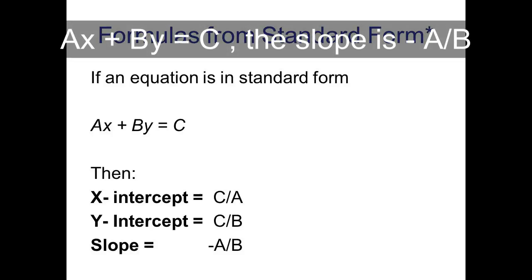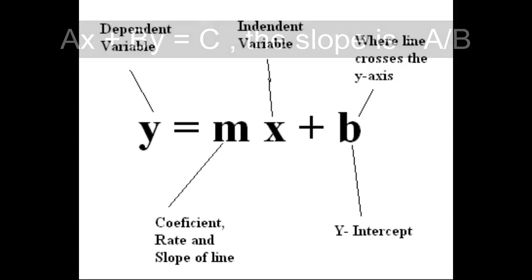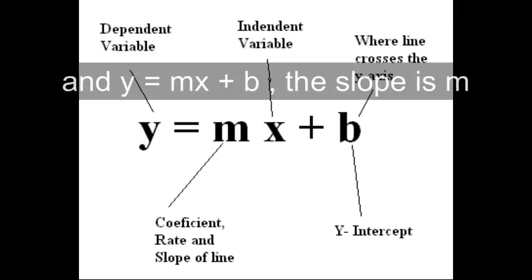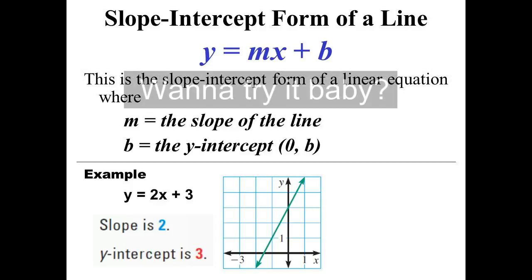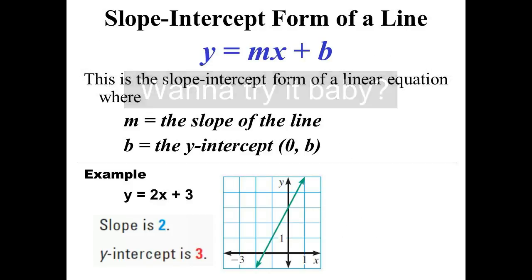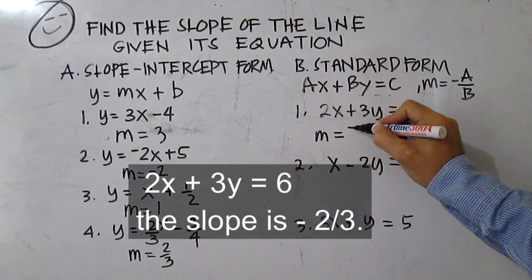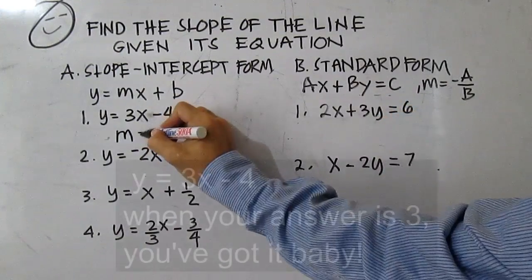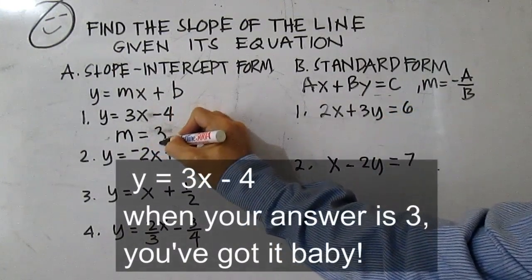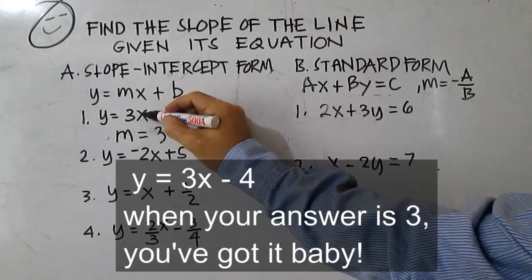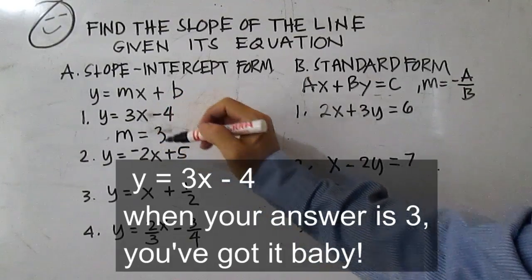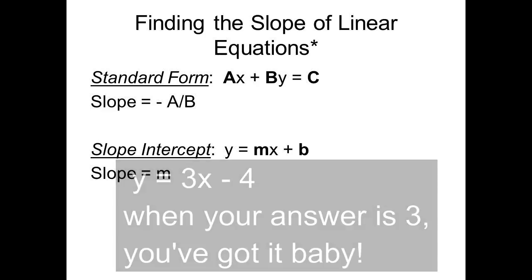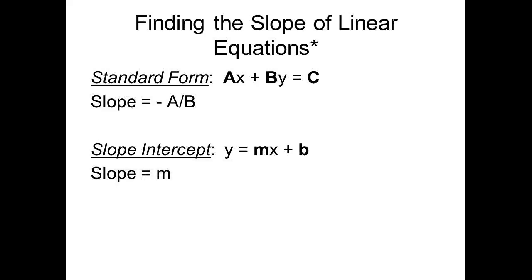You can also find the slope given each of these equations. For Ax plus By equals C, the slope is the opposite of A over B. For y equals mx plus b, the slope is m. For 2x plus 3y equals 6, the slope is negative 2 over 3. For y equals 3x minus 4, the slope is 3. You got it, baby!